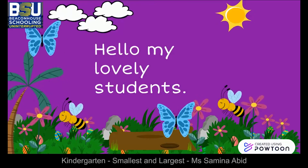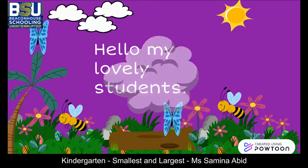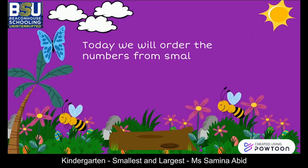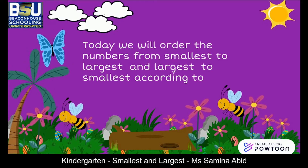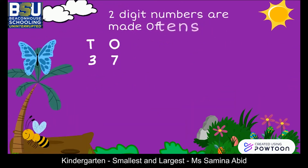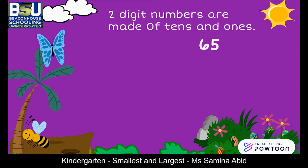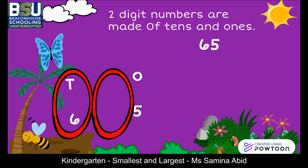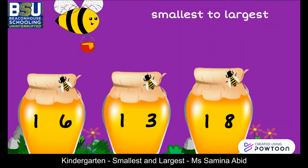Hello, my lovely students! I hope you all are doing well. Today we will order numbers from smallest to largest and largest to smallest according to their place value. Two-digit numbers are made of tens and ones. Look at number 65 — it has six tens and five ones.